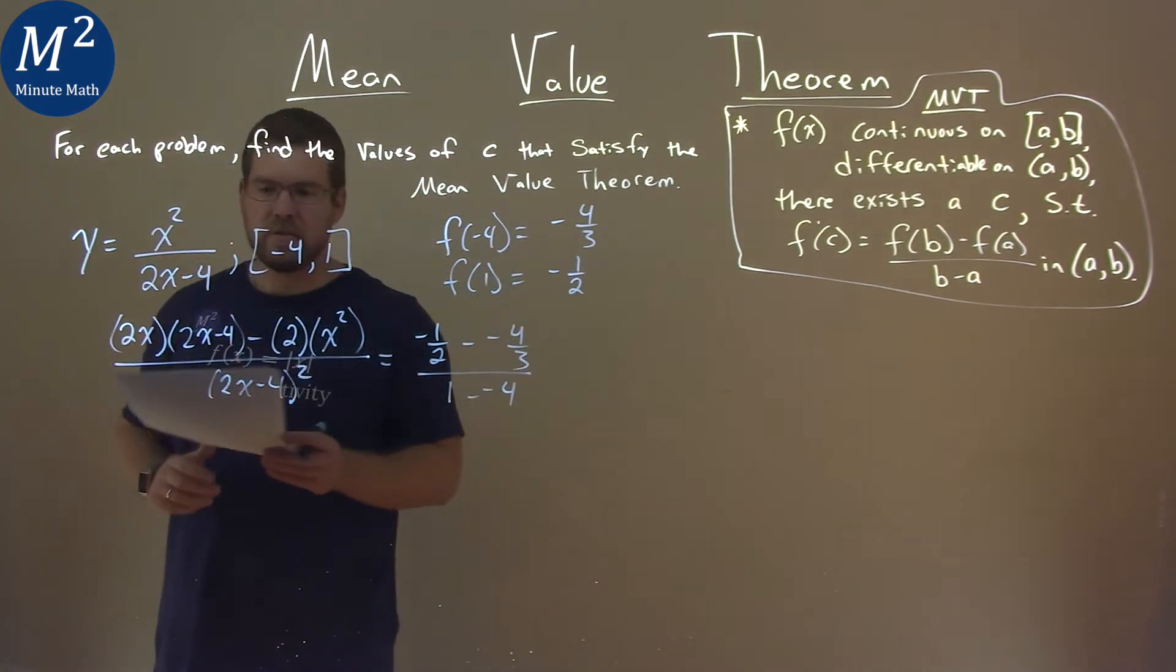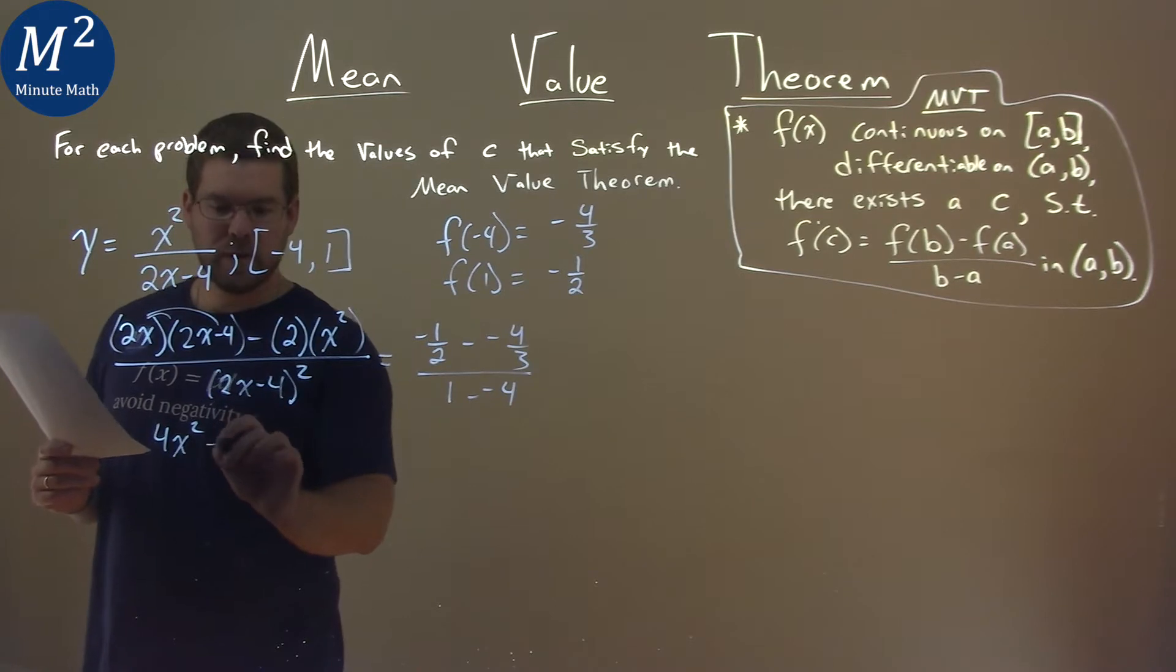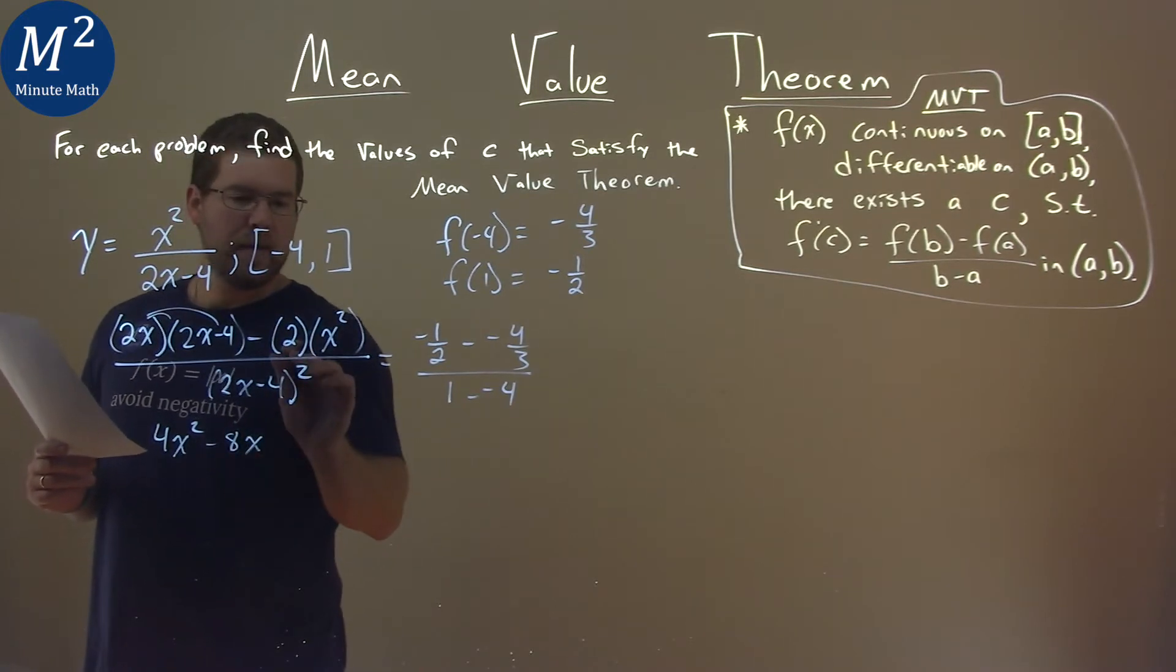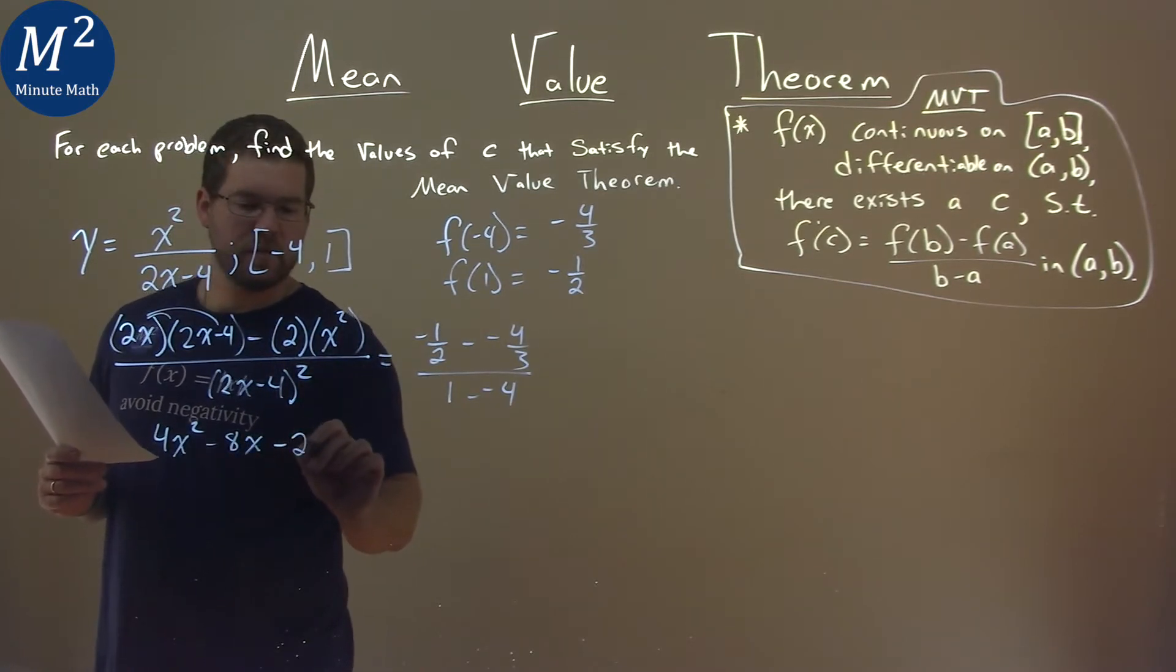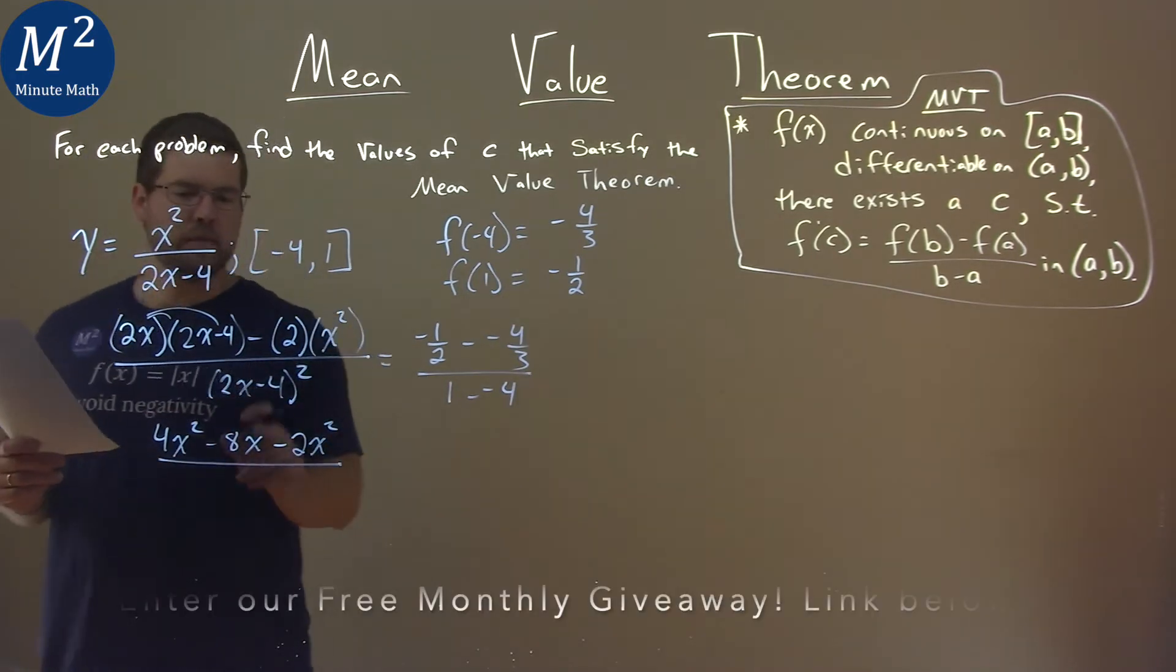So, left-hand side, let's go simplify this. 2x times 2x is 4x squared, and 2x times minus 4 is minus 8x, and then 2 times x squared is minus 2x squared. All over, the denominator simplifies out.